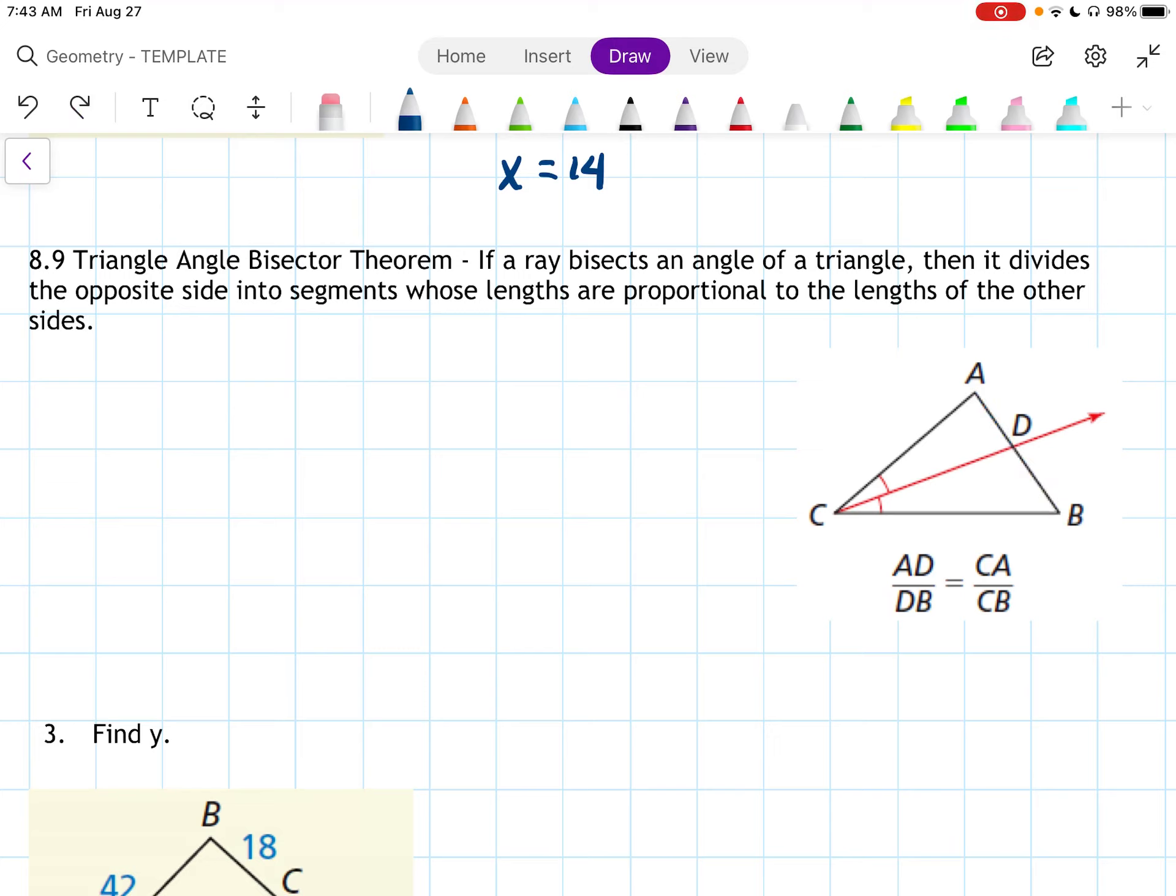Not necessarily in half, but it's cut. And AD, which is the first piece, is proportional to, or excuse me, over DB is equal to CA over CB. So they took the left cut over the right cut, equals the left side over the right side, right? If you're looking at the perspective of C.